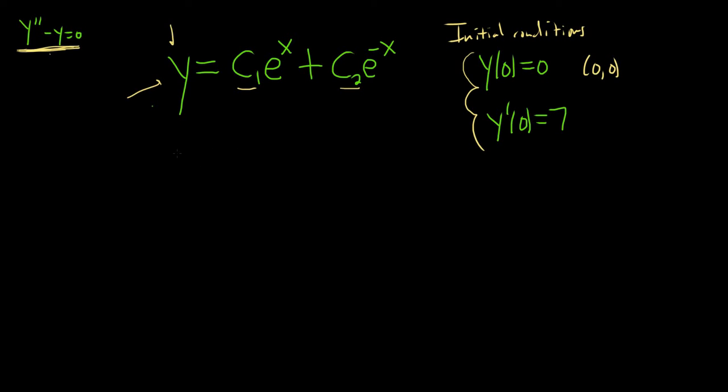all you have to do is start by taking the derivative of your solution. So y prime. Here the derivative of e to the x is e to the x. And the derivative of e to the negative x is e to the negative x times negative 1. So I'm going to go ahead and put the negative here. That comes from the chain rule.